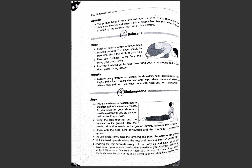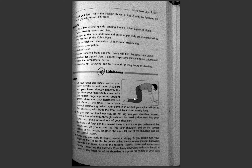The next asana is Balasana. It gently stretches and relaxes the shoulders, neck, back muscles, hips, thighs, and ankles. The major part of the upper body is stretched, which helps keep the brain calm, reduces stress and fatigue significantly. It also provides great help for back and neck pain.